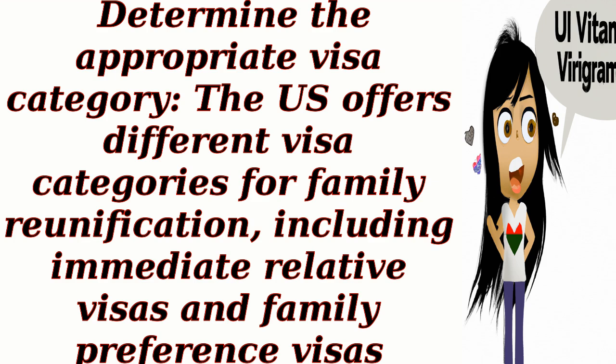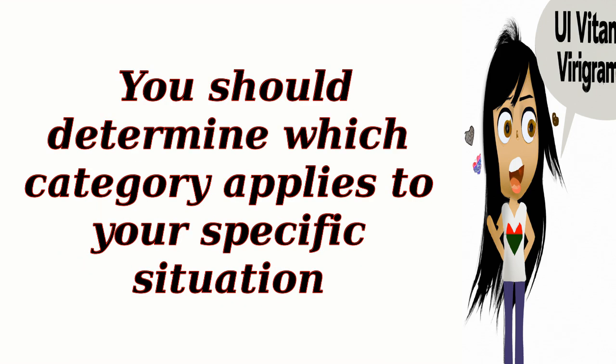Determine the appropriate visa category. The U.S. offers different visa categories for family reunification, including immediate relative visas and family preference visas. You should determine which category applies to your specific situation.